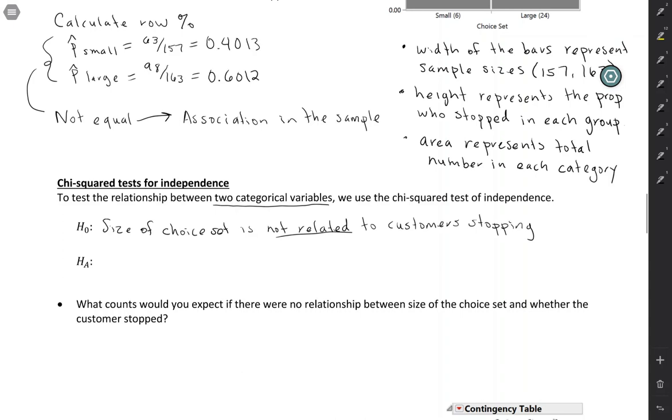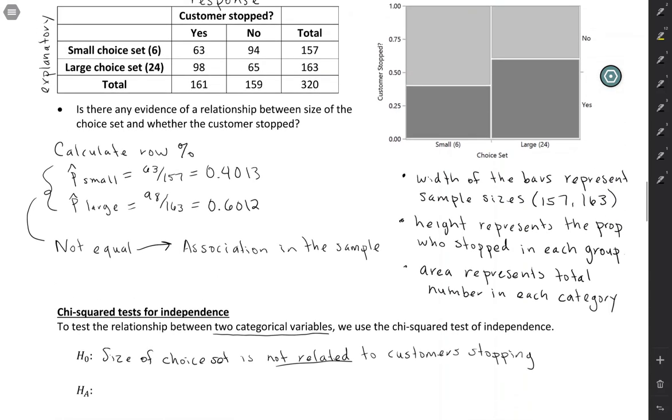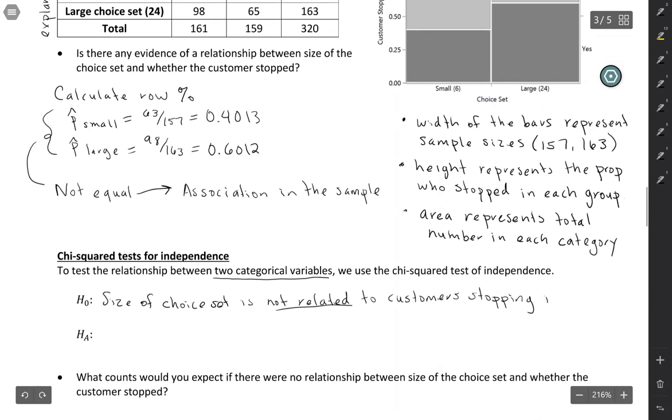Obviously we don't need a test to tell us what happens in the sample. We already know that there's an association in the sample, so this is about what is going on in the population. Is there a long-run relationship between these two variables?